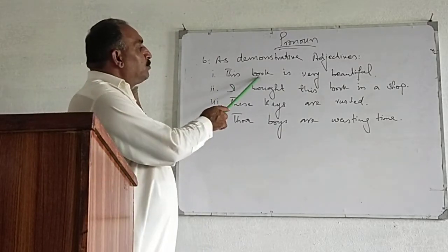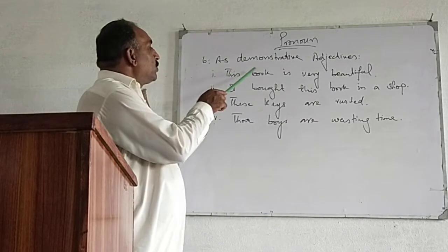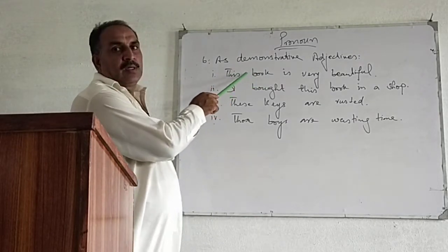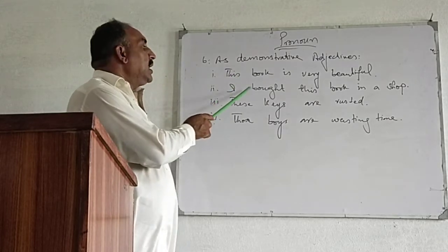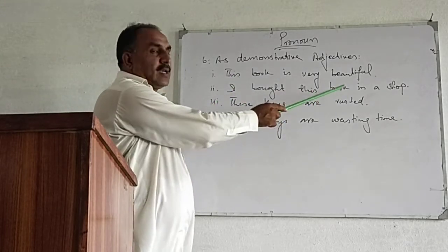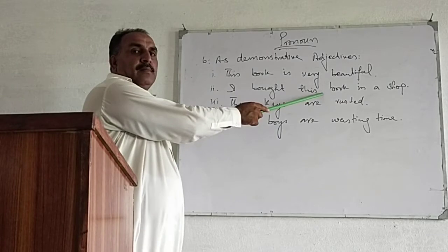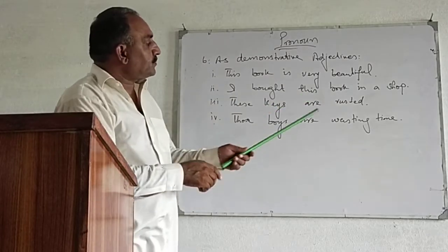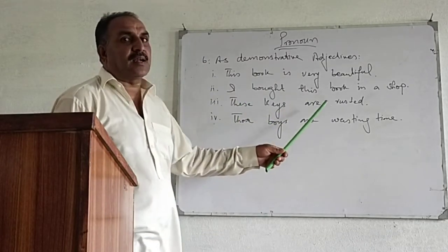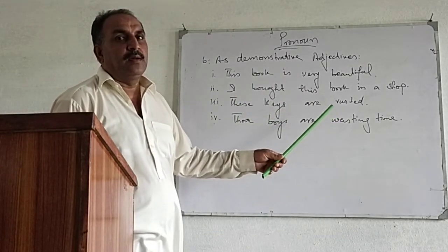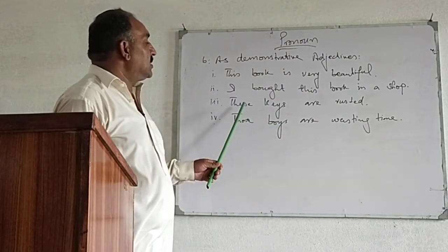For example, 'this book' — book is the subject, a noun. So 'this book' — which book? This book. Here 'this' refers to the noun 'book,' so it is a demonstrative adjective. 'I bought this book' — again, 'this book,' this is a demonstrative adjective. 'These keys are rusted' — which keys? These keys. So here it is a demonstrative adjective.